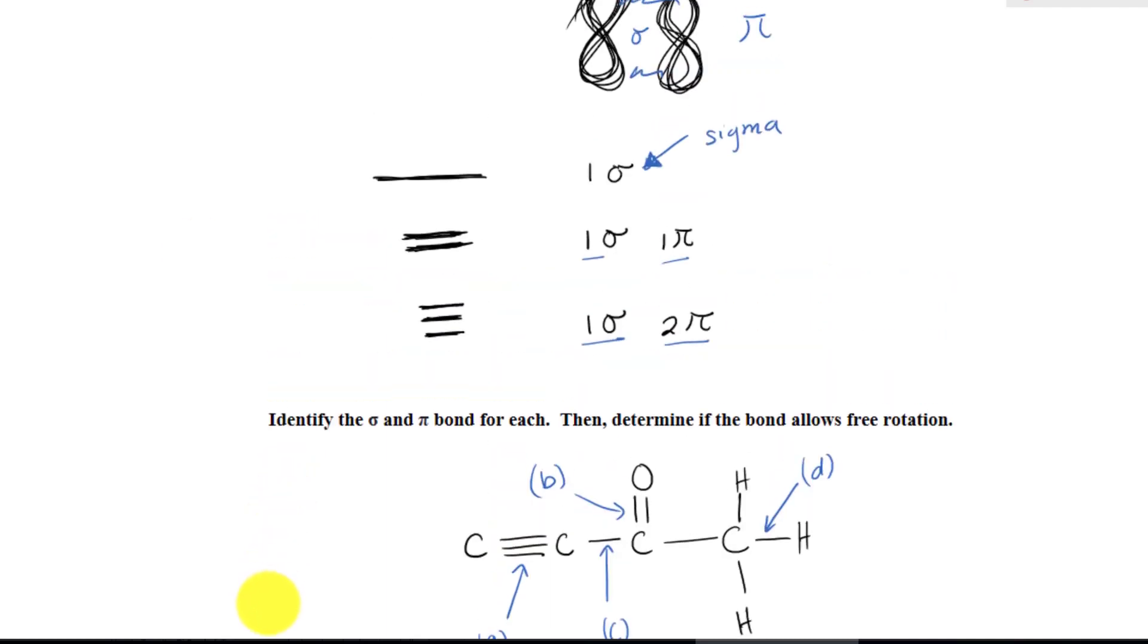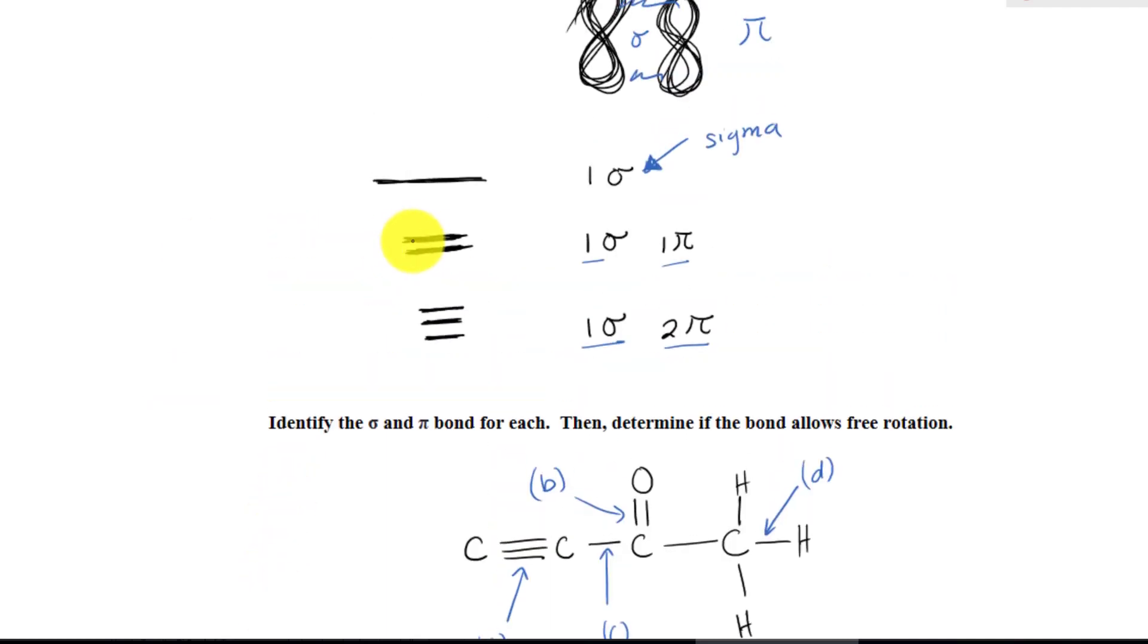If we look at this, use your common sense. If you have this right here, can you freely rotate this? What does the word rotation mean? Rotation means it's allowed to turn 360 degrees. Can you turn 360? No, you will get stuck right there. So you cannot really freely rotate 360. But with a single bond, you are allowed to do that.